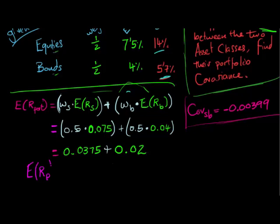2% plus 3.75% is 5.75%, and that's the expected return.